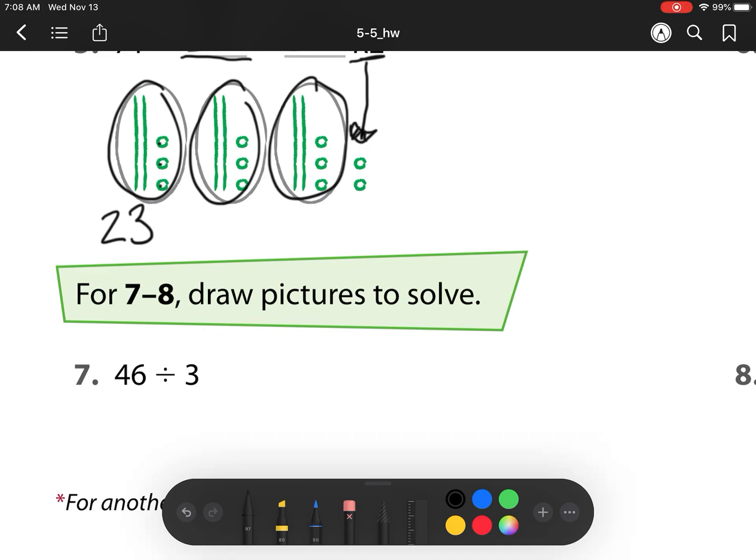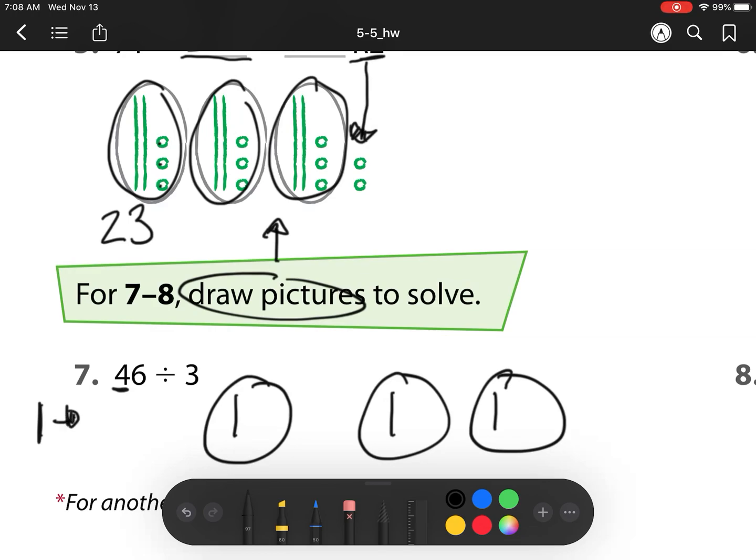Our next one, draw pictures, so I need to copy this kind of model that I have right above. So I have 3 groups, so I'm going to have 1, 2, 3 groups. And I start with my largest place value, so I start with that ten. So I have 1, 2, 3. So what do I do with that left over ten, that 4 tens? Well, I break it up into ones. 1, 2, 3, 4, 5, 6, 7, 8, 9, 10. And now I have these 6 ones also, 1, 2, 3, 4, 5, 6. So I have to now split this up, and so I have 10 plus 6, so I have 16 ones right here.